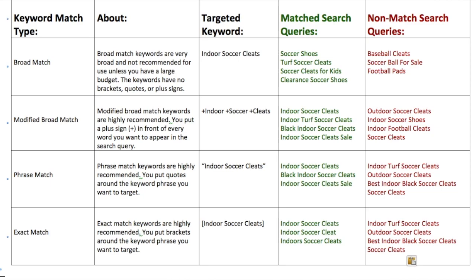To get started, there are four different main types of keyword match types: broad match, modified broad match, phrase match, and exact match. We created this table so we can go over each keyword match type — the targeted keywords, how they work, which search queries match, and which do not match for these targeted keywords.